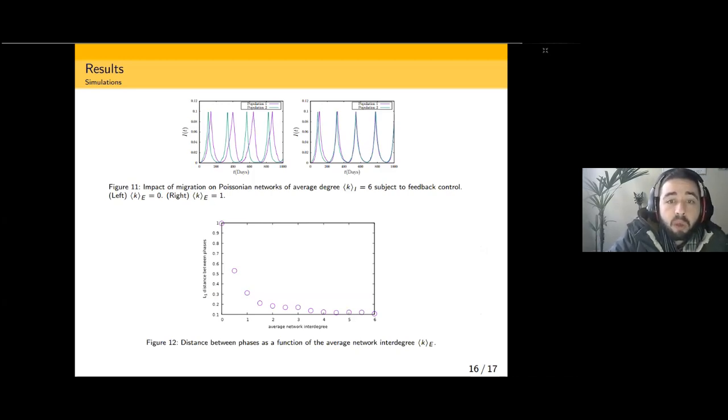And an upper limit where the two networks become a single network with an average degree of connectivity equal to k internal. This slide shows our results for the model proposed. Figure 11 shows the synthetic data generated. The left panel shows the model for an average of zero connections between populations. The right panel shows the same simulation but now with an average of one connection between the populations. We can clearly see that on the right panel, the waves are more synchronized than on the left one.